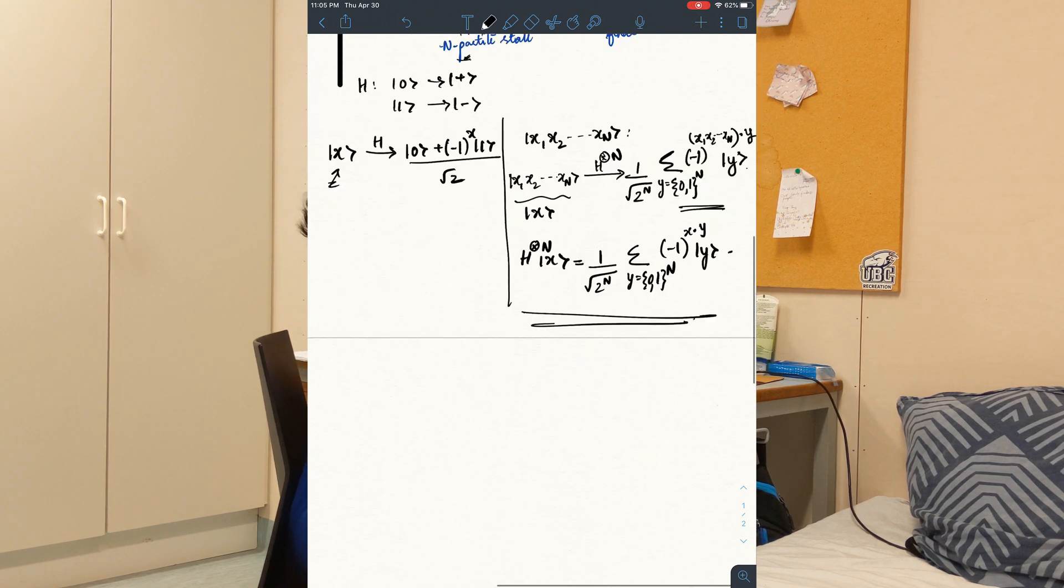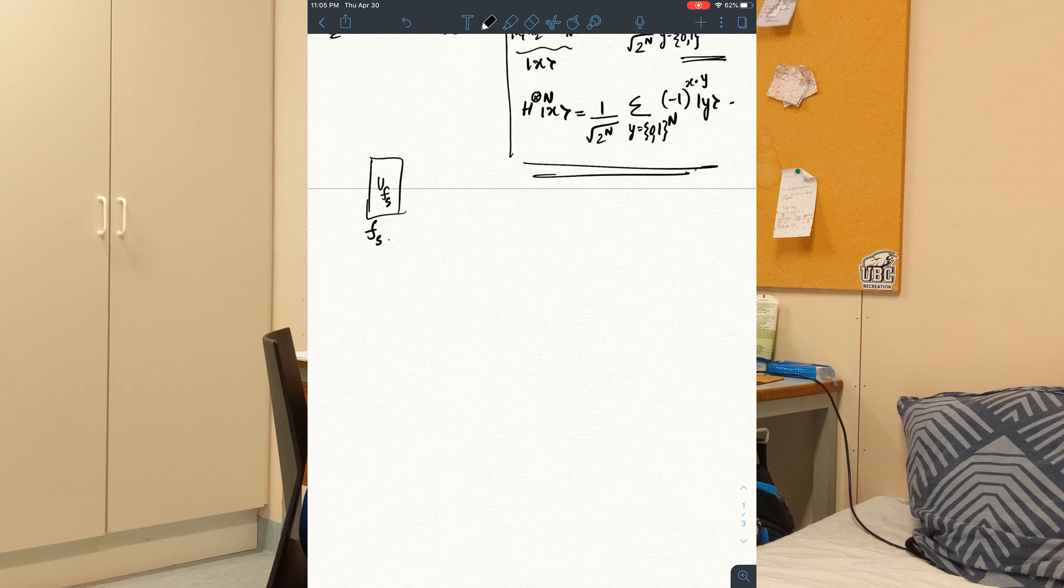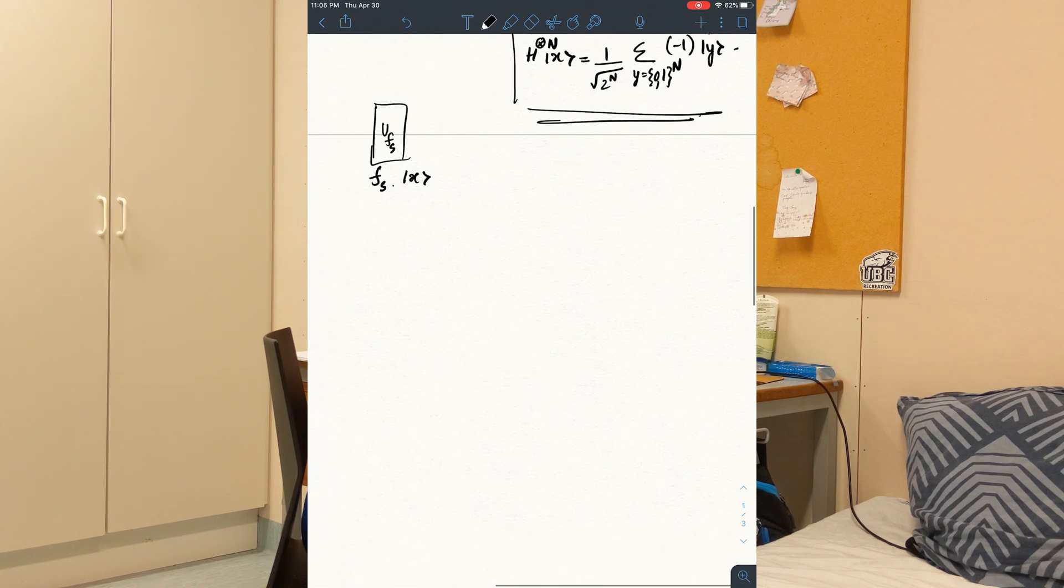Now the transformation matrix works in such a way that it's basically the function f acting on the input state. And any state that goes through this ends up turning into this. So this is the input state, which basically means that we gain a phase whenever the values of s and x are 1. So this is our state.